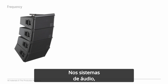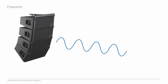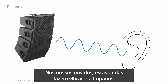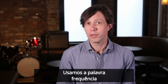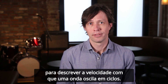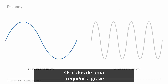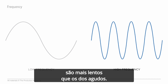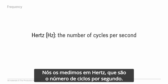In audio systems, speakers create sound waves. When these waves hit our ear, they vibrate the eardrum, which is how we hear sound. We use the term frequency to describe how fast a wave cycles. A low frequency will cycle slower than a high frequency. We measure this in hertz, which is the number of cycles per second.